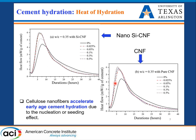Looking at cement hydration heat flow plots: on the left we have the silica-cellulose nanocomposite and on the right the pure cellulose nanofiber. The heat flow peak shifted to the left and the peak intensity increased, so cellulose nanofiber has an acceleration effect on cement hydration. This was observed at a 0.35 water-to-cement ratio.